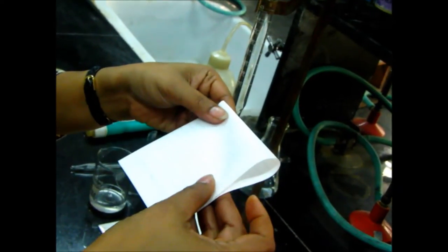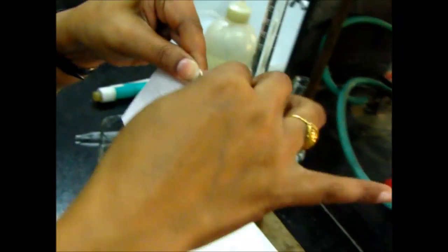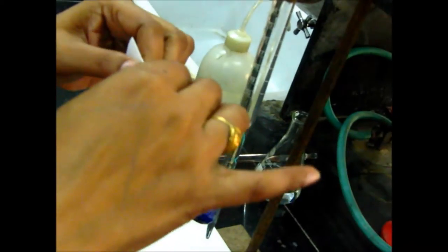Fold the sheet twice as shown, and then cut through one of the edges.